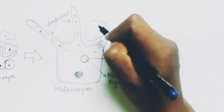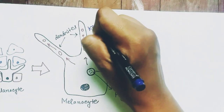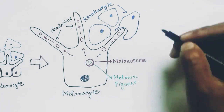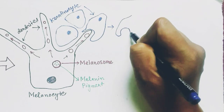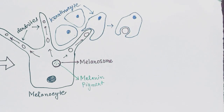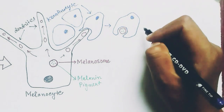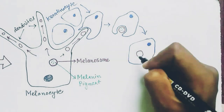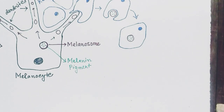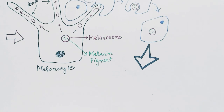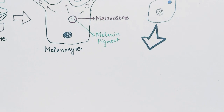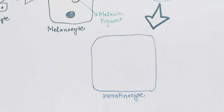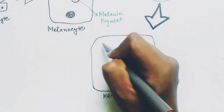These keratinocyte cells will engulf a portion of the dendrite of the melanocyte and take the melanosome organelle inside the keratinocyte. The melanosome goes inside the keratinocyte. This is one keratinocyte cell with the melanosome inside it. This is a zoomed picture of a keratinocyte having a melanosome.